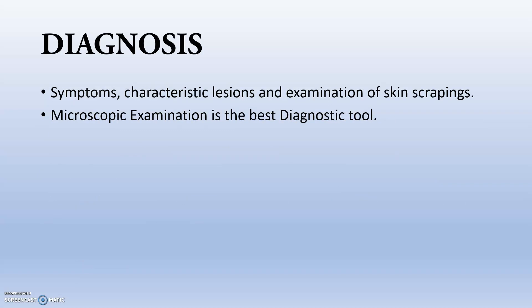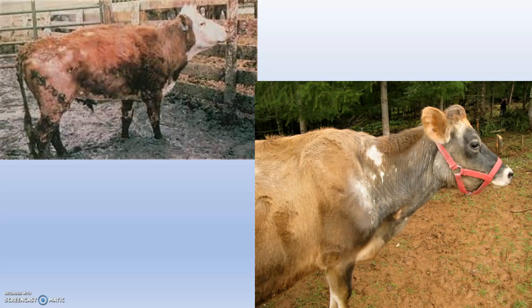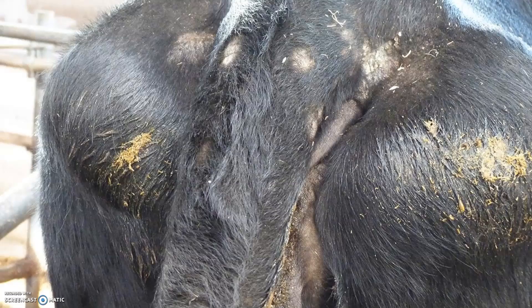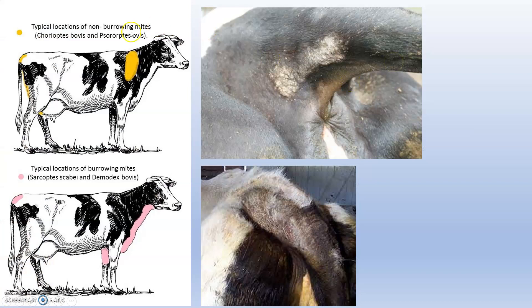Diagnosis is mainly through the symptoms; tentative diagnosis is always used, along with characteristic lesions and examination of skin scrapings through microscopic examination. These are examples of mange in animals — bovine mange. You can see the regions showing focal alopecia. Chorioptes and Psoroptes mainly affect certain regions, while Demodex bovis and Sarcoptes mainly affect other regions of the body.